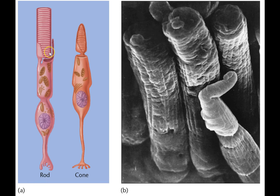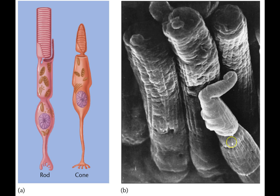The outer portion here contains these discs, which in turn contain the photopigments, which are crucial for actually transducing light, converting light into changes in the membrane's potential. This is a scanning electron micrograph of an actual human retina, showing you the rods and a cone.